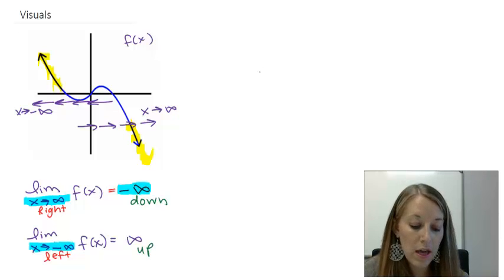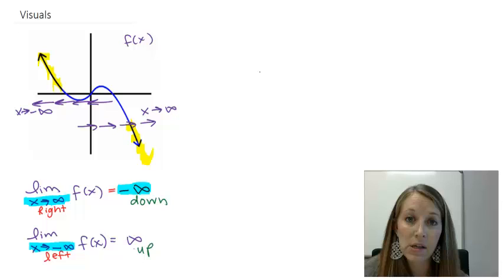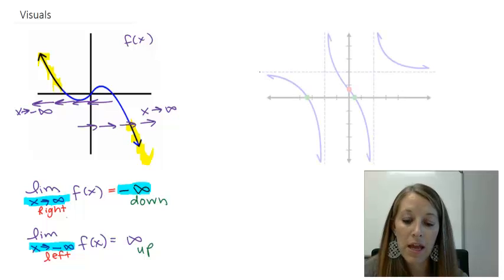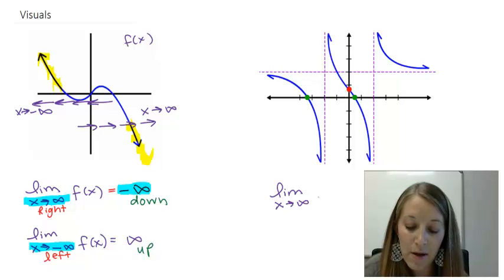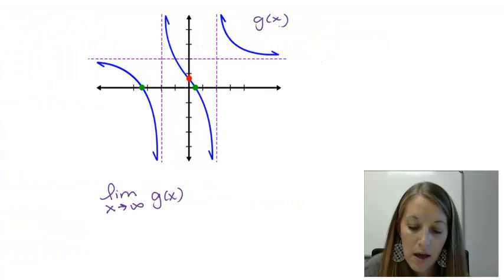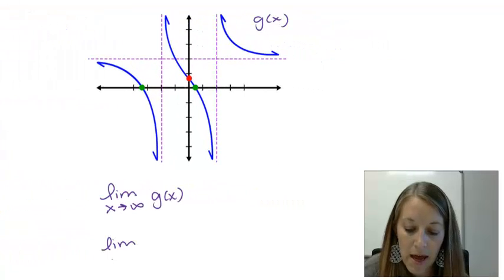So we're looking at the right and left-hand parts of the graph and seeing what the graph is doing. Our answers can be positive and negative infinity like we saw, but they can actually be numbers. Let's look at that with the next example. We want the limit as X approaches positive infinity of G of X, and eventually the limit as X approaches negative infinity of G of X.